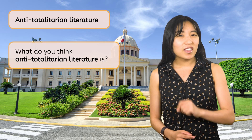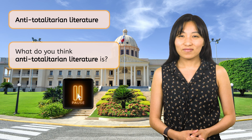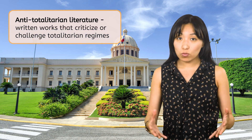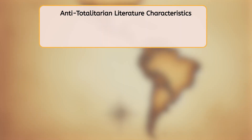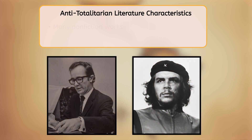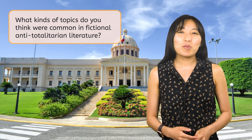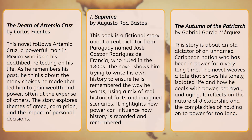Pause the video here and write what you think anti-totalitarian literature is in your PDF. Resume when ready. As you may have inferred, anti-totalitarian literature refers to written works that criticize or challenge totalitarian regimes. Activists of this time period, such as Rodolfo Walsh and Che Guevara, wrote non-fiction works critiquing totalitarian regimes. But fiction also played a key role in anti-totalitarian literature. What kinds of topics do you think were common in fictional anti-totalitarian literature? Pause the video here and read the summaries in your PDF. Then write down any common topics or characteristics you notice. Resume when ready.